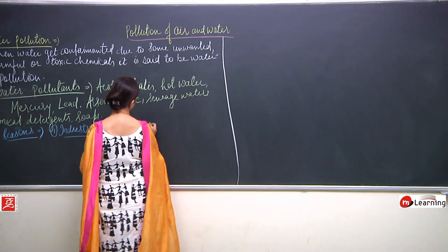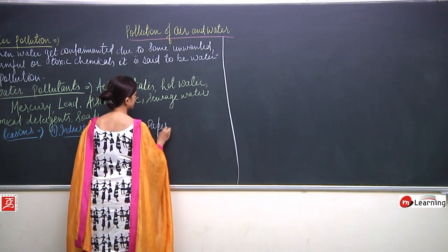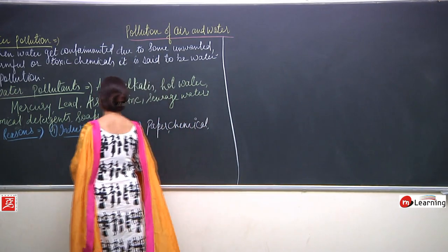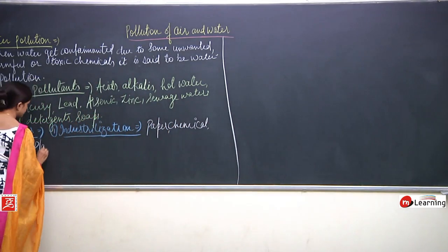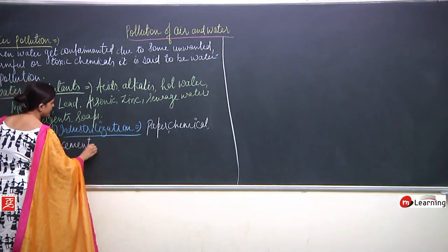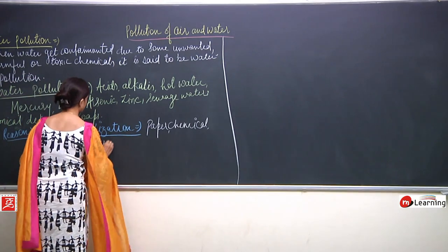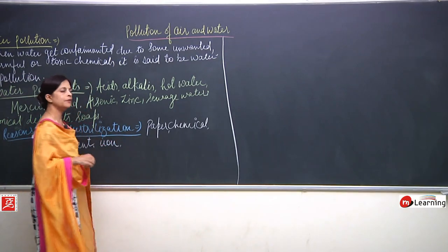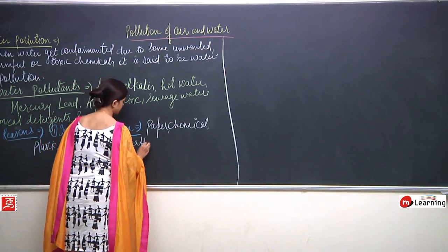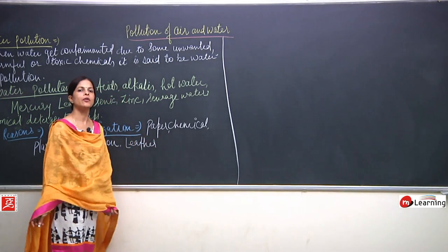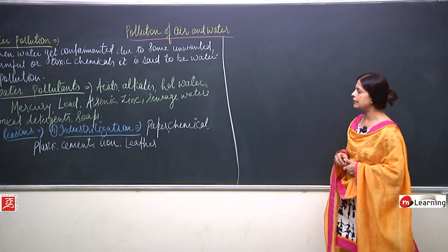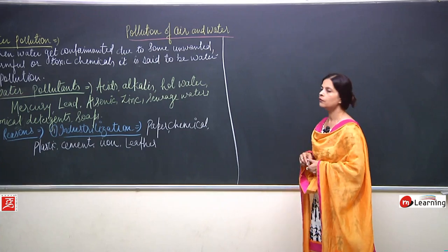Which kind of industries are we talking about? All industries — paper, chemical, plastic, cement, iron factories, leather industries. Whatever factory we talk about, it is going to release waste. This was the first point: industrialization.